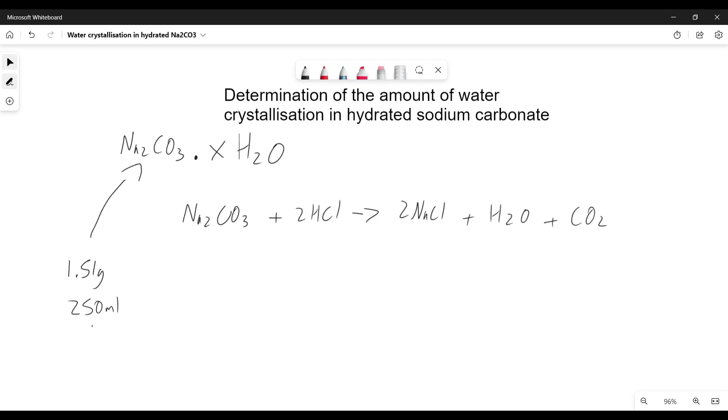We then take 25 mils of this and titrate it against 0.2 molar HCl. The amount of 0.2 molar HCl that it takes is 10.6 mils. That is our titrant amount.